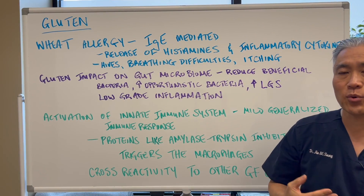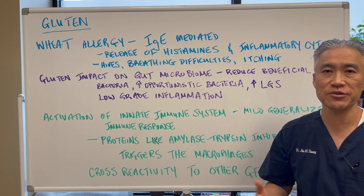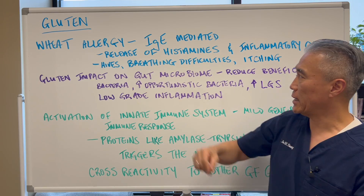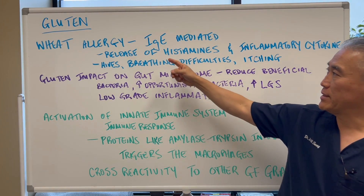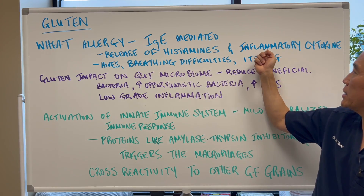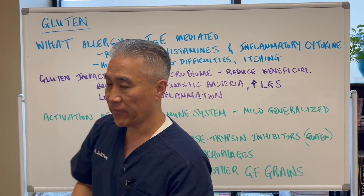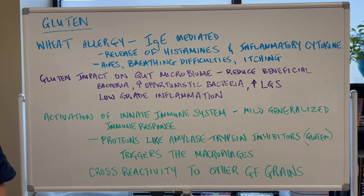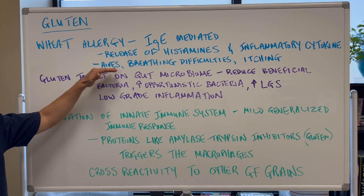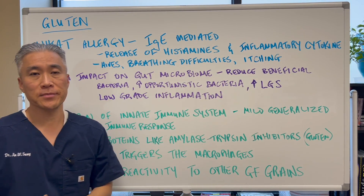In addition, you can have what we call allergies — an IgE response to gluten, basically a wheat allergy. It's an IgE-mediated response that releases histamine and can create a release of inflammatory cytokines such as interleukin, tumor necrosis factor, etc. It can create hives, breathing issues, asthma, and itchiness.